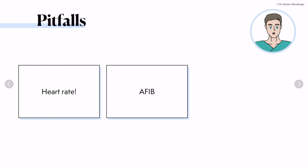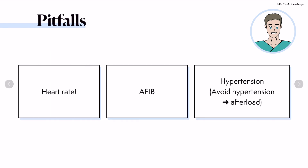There are several pitfalls to remember. First, heart rate: we do not want tachycardic or bradycardic patients. In atrial fibrillation, you have to measure several heartbeats because the highest measured velocity is not automatically the one to use. You also have to avoid hypertension, because hypertension increases afterload and therefore affects the aortic valve measurements.